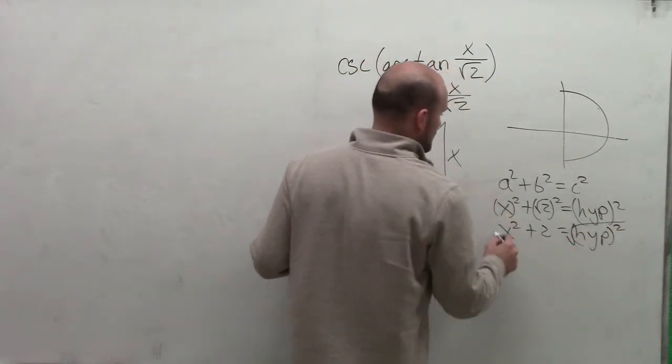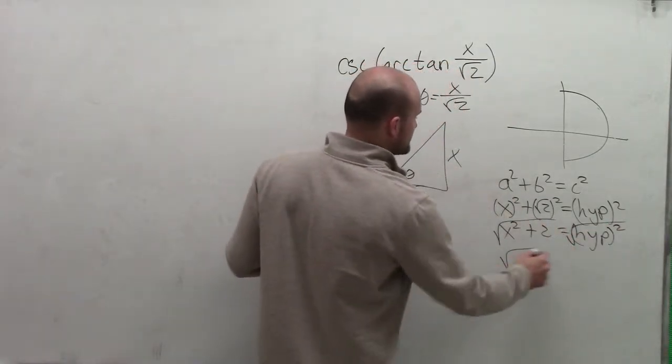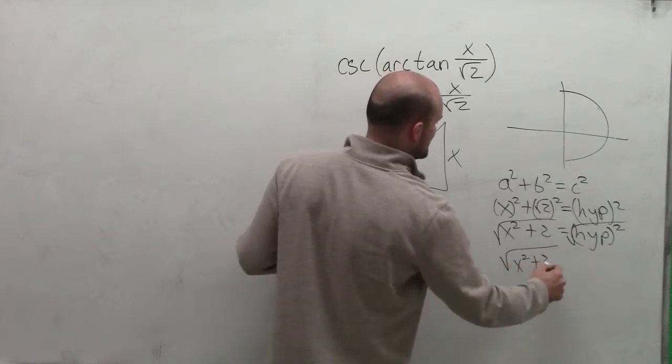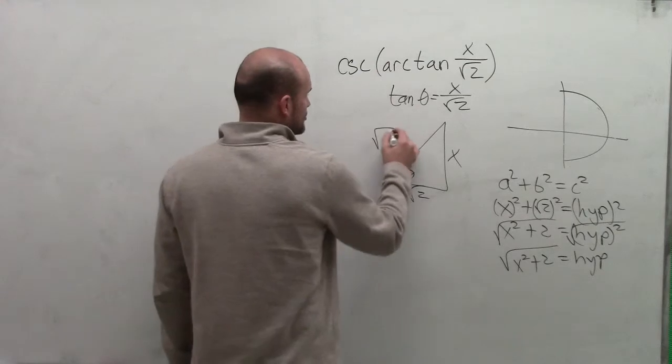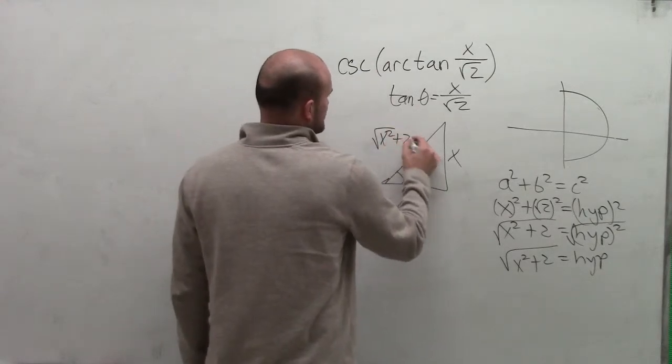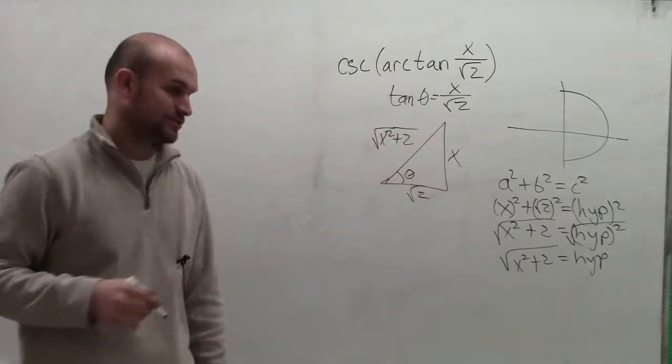Now to undo my hypotenuse squared, I'll take the square root of both sides. So I have the square root of x squared plus 2 equals my hypotenuse. Therefore, my hypotenuse is going to be x squared plus 2. Or I'm sorry, the square root of x squared plus 2.